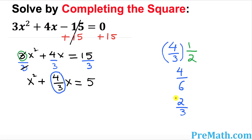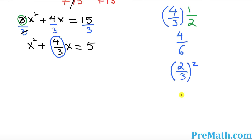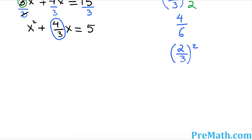Now whatever you got, you must take the square of it. We took the coefficient of x, which is 4 over 3, took the half to get 2 over 3, and now we square it. We are going to add this quantity on both sides of the equation.